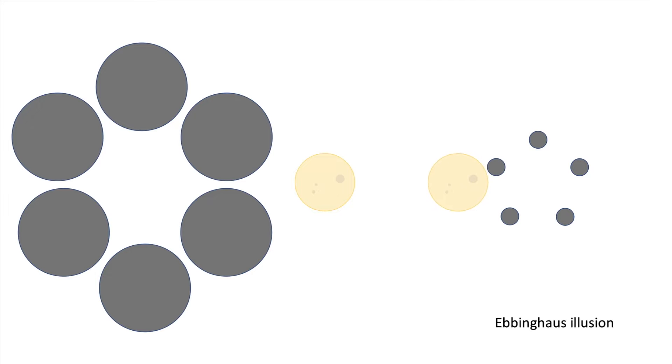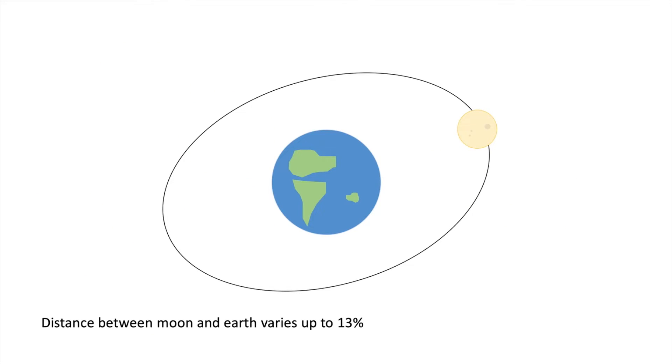Optic illusions actually play mind games and also make us believe the moon changes size depending on the position it has. From our perspective, the diameter of the moon indeed changes. The reason for this is the elliptical orbit of the moon. It takes approximately one month for the moon to circle the earth. Because of the ellipse, there is a varying distance from 363,000 up to 405,000 kilometers.